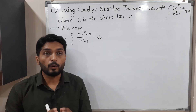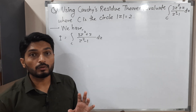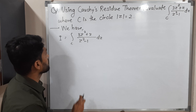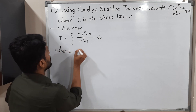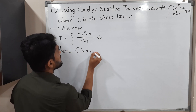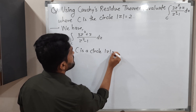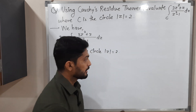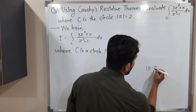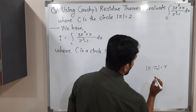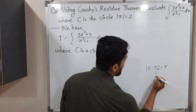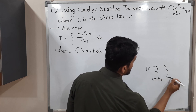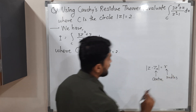I will give more importance to this closed curve C. What is closed curve C? They have mentioned C is a circle. What is the equation of the circle? Mod z is equal to 2. So let me tell you the standard equation of a circle: mod(z - z₀) = R. This is the standard equation of a circle. Its center is z₀ and its radius is R.